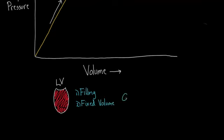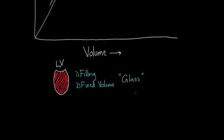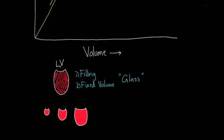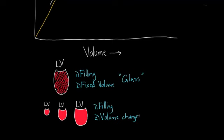It almost makes it look like you're filling up a glass of water. The correct way to think about left ventricular filling is more like this: you have a smaller-volume left ventricle filling up with blood. It starts out small, then you add more blood, and you finally fill it up completely. So all three of those images show the left ventricle at different points in time. This second picture does a better job of showing that the volume changes — it's not fixed.